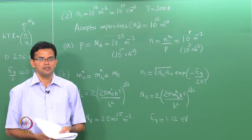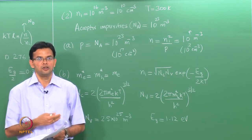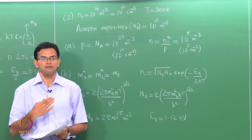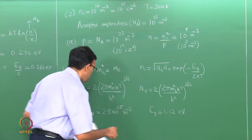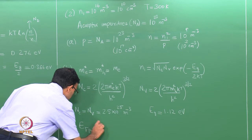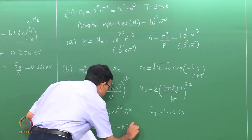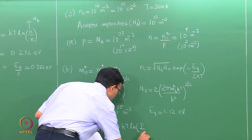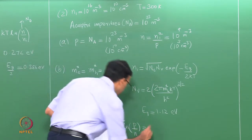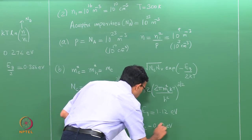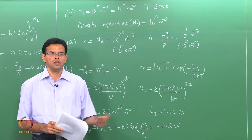We now have to calculate the position of the Fermi level. This is a p-type material because we have acceptors rather than donors. In the case of donors the Fermi level moves closer to the conduction band; in the case of acceptors the Fermi level moves closer to the valence band. E_fp − E_fi = −kT · ln(p / N_i). Substituting values, this is −0.42 eV — below the intrinsic Fermi level.